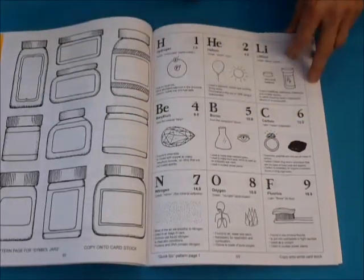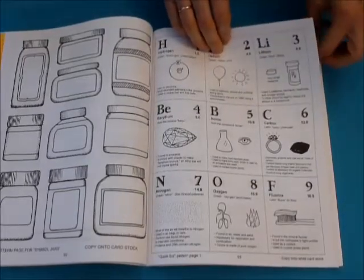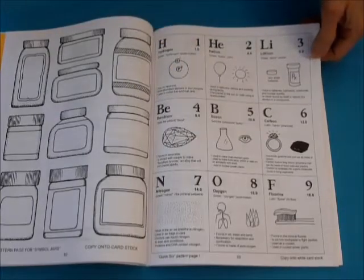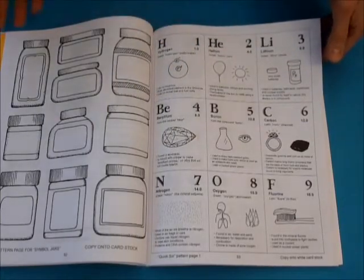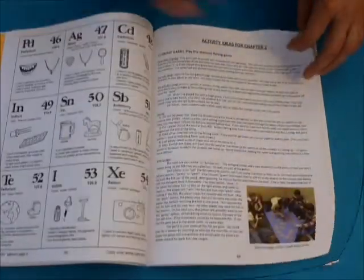They're color-coded. So there's, of course, a card for every element up to, I think it was 109. I didn't go all the way up to 118 because when I created the curriculum, they hadn't even named them yet. And those high numbers don't really do much anyways. They're kind of artificial elements.